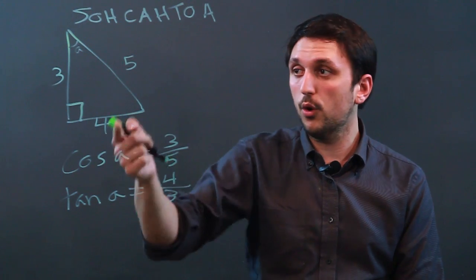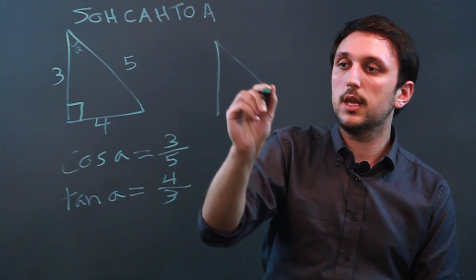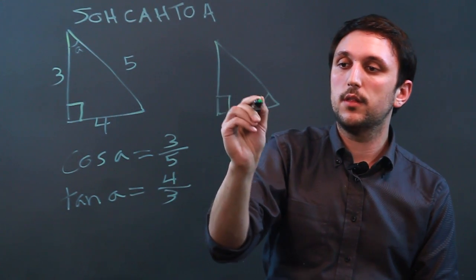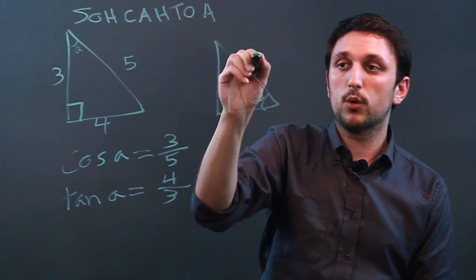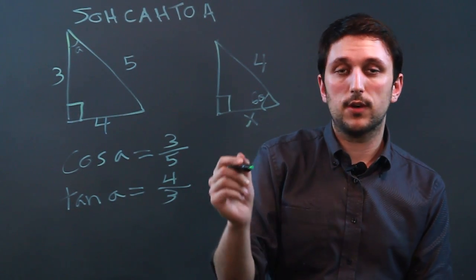Now if we have a triangle in which we are given this degree measure of 60, we're given this length, and this length is called X, and they say solve for X.